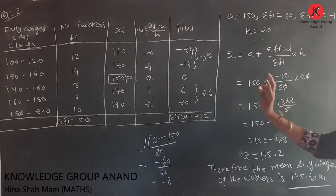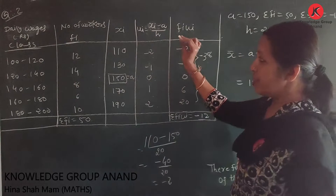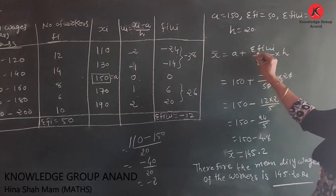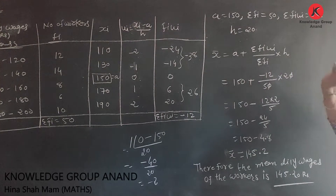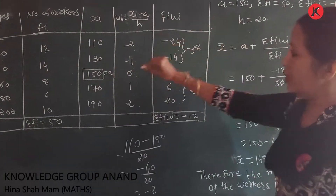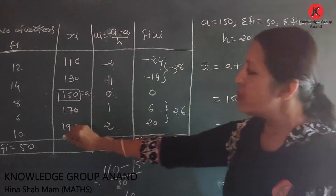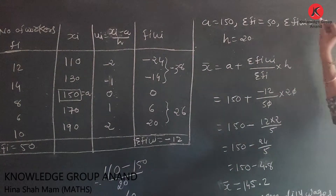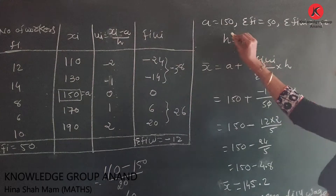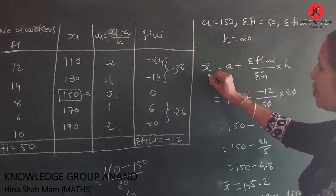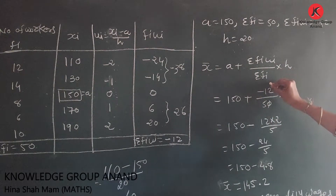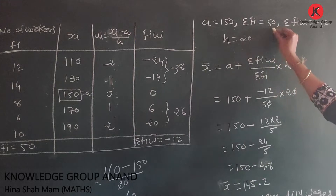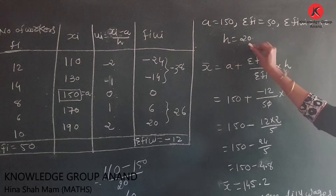Using the step deviation method, x̄ = a + (Σfi·ui / Σfi) × h. With a = 150, Σfi·ui = -12, Σfi = 50, h = 20: x̄ = 150 + (-12/50) × 20 = 150 + (-240/50) = 150 + (-4.8) = 145.2.